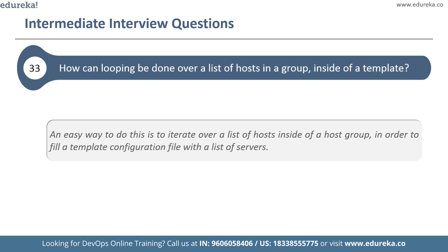The next question is: how can looping be done over a list of hosts in a group inside a template? An easy way is to iterate over a list of hosts inside a host group to fill a template configuration file with a list of servers. This is done by accessing the groups dictionary in your template. To access facts about these hosts such as IP addresses, you need to make sure that facts have been populated — for example, ensure you have a play that talks to the db servers. Then you can use facts within your template.